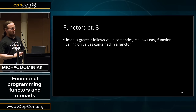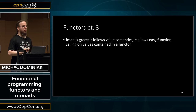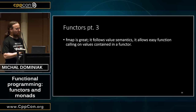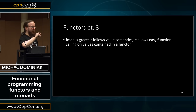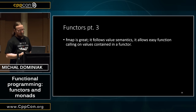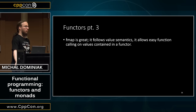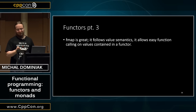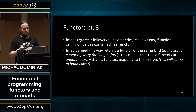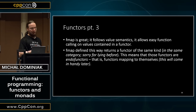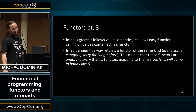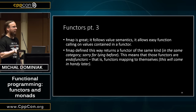So fmap is great and it's really useful. Think of every time you wrote std::transform. fmap is really nice, especially when you want to write even more generic code. You cannot, for example, call a standard algorithm on an optional, but you can call fmap on optional. And those functions that implement fmap in this way are endofunctors — there is a mapping from a function to a function.